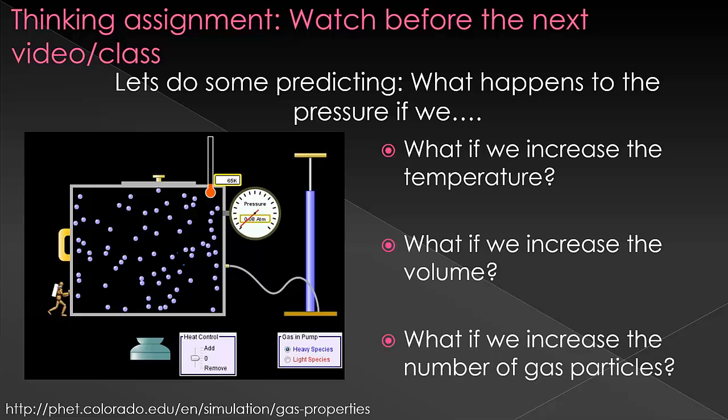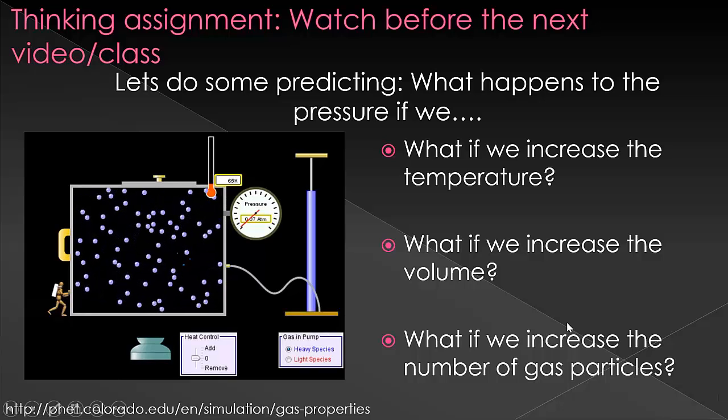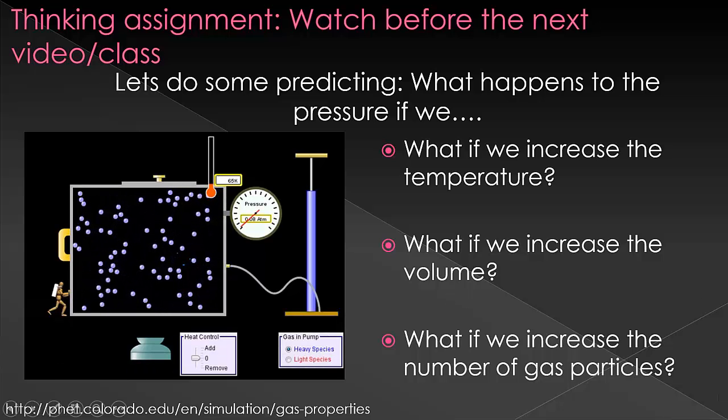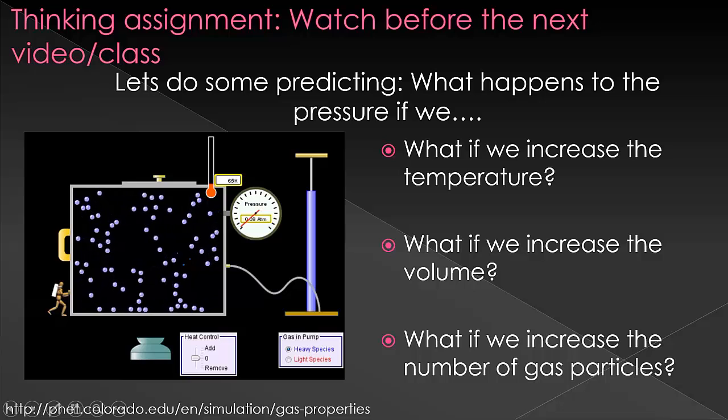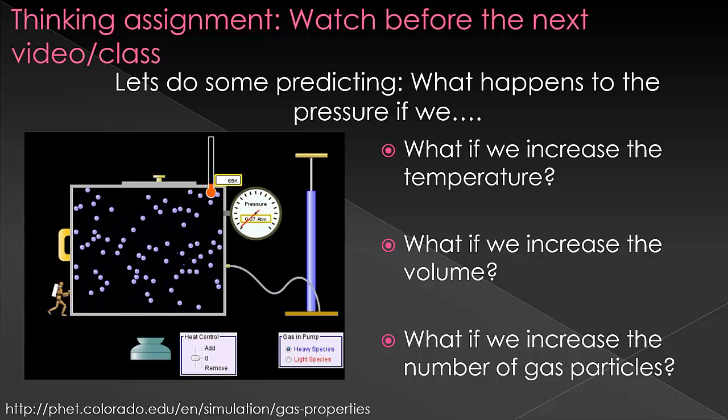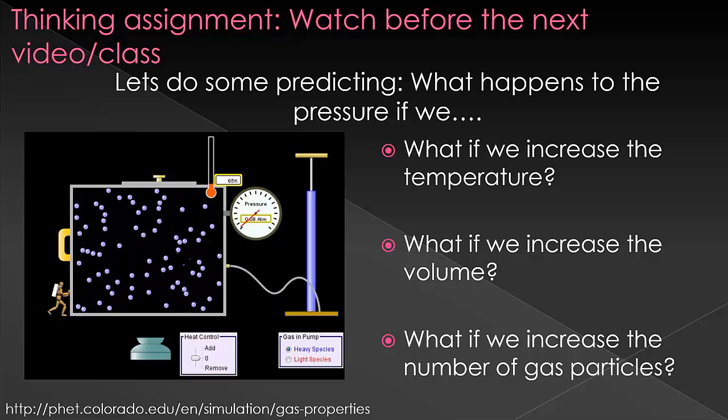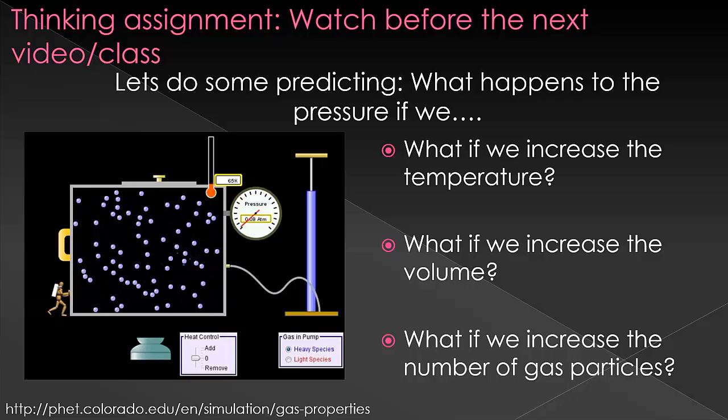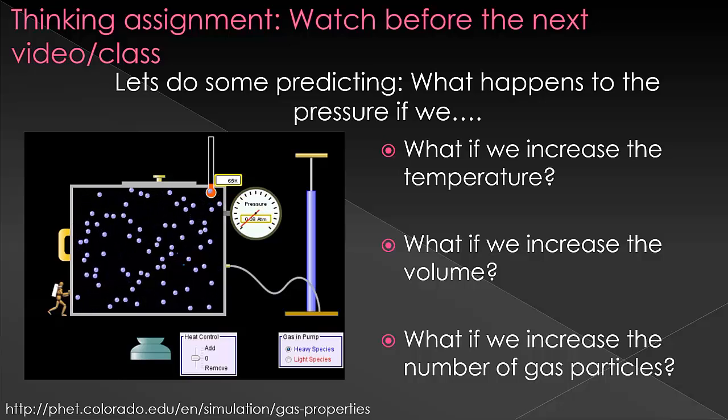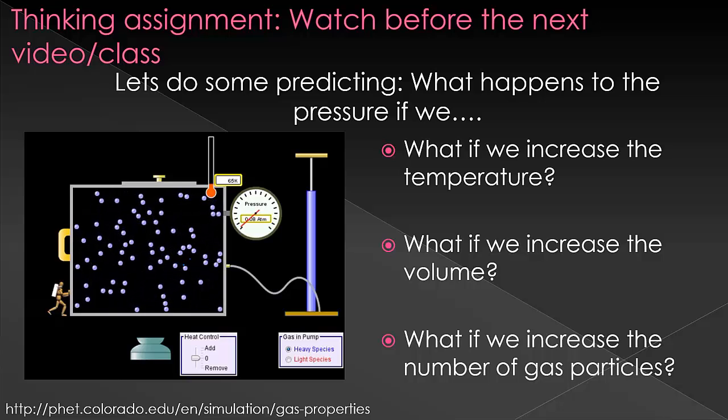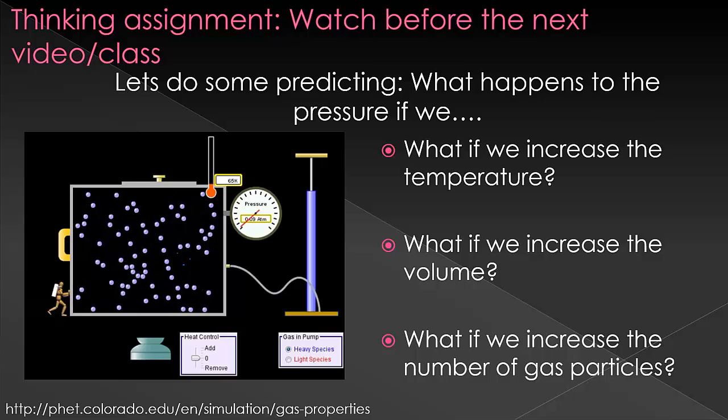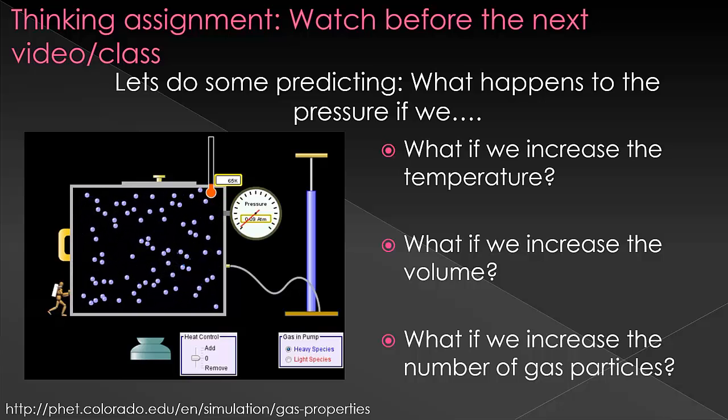So think about what's happening as these little billiard balls, as we're kind of thinking of them, bounce around. And what's going to happen if we increase the temperature? As a hint for that, think about what happens to the speed of the particles if we increase the temperature. And then think about what's going to happen to the number of collisions if we increase the volume. And then what's going to happen to the number of collisions if we increase the number of particles? And that should help you predict what's going to happen.